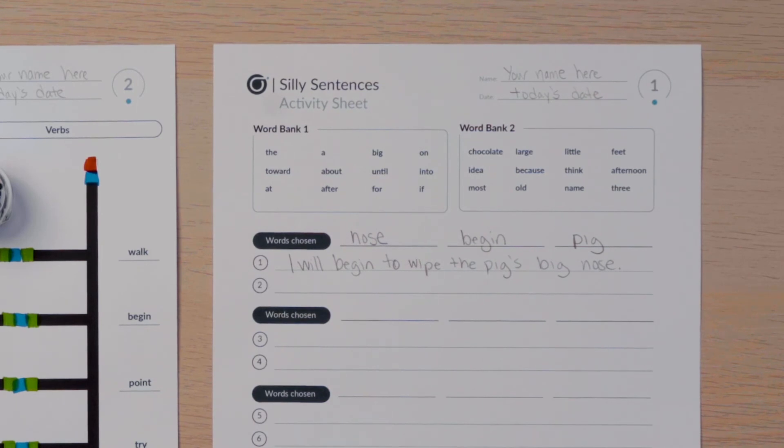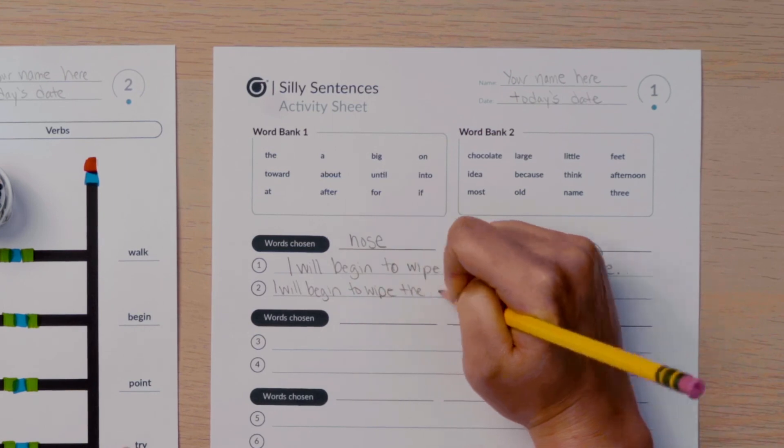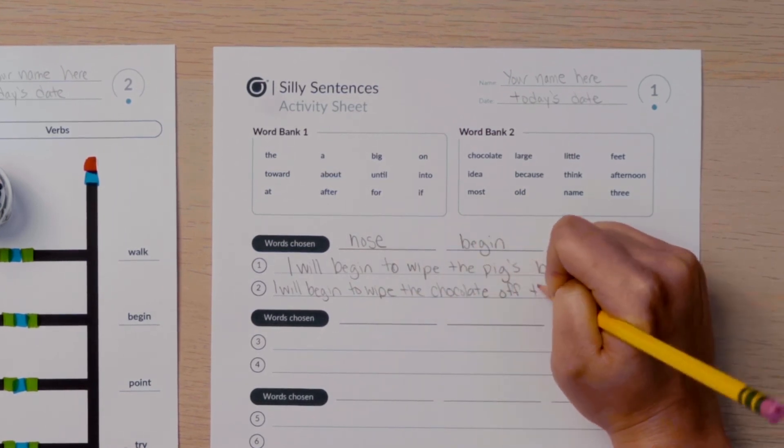You can change your sentence around however you like, but still use the two nouns and the verb your Ozobot chose. For my second sentence, I will write, I will begin to wipe the chocolate off the pig's big nose.